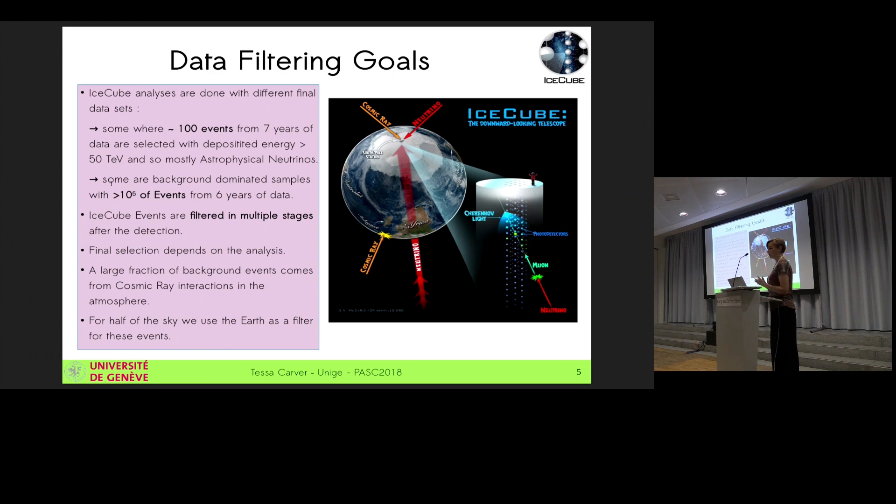And we do this by filtering at multiple stages. And each stage tends to branch out for the different kinds of data paths that we need to use. And then the final selection is very dependent on the analysis being run. And something that we can take advantage of for IceCube is that neutrinos, they don't interact very much on their journey to Earth. Some of our background is atmospheric muons. And so we can really eliminate a lot of our background using the Earth as a natural filter so that anything coming from the northern hemisphere has to pass through the Earth. And so atmospheric muons, they don't tend to survive unless they're really badly reconstructed.